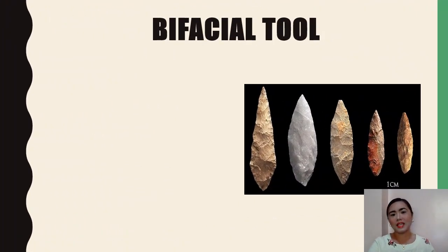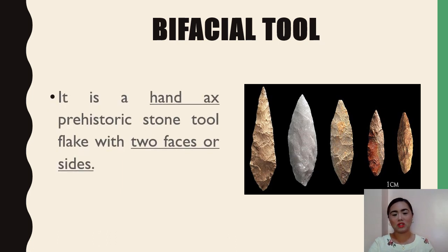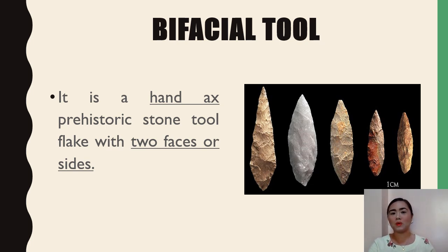The second type is the bifacial tool — a hand axe. It is a prehistoric stone tool flake with two faces or two sides. The bifacial tool can be used as a knife, a picker, a scraper for meat, or as a weapon.